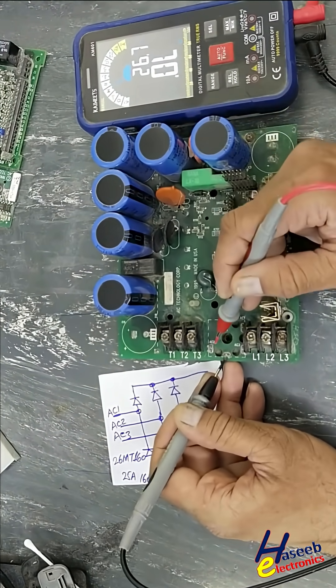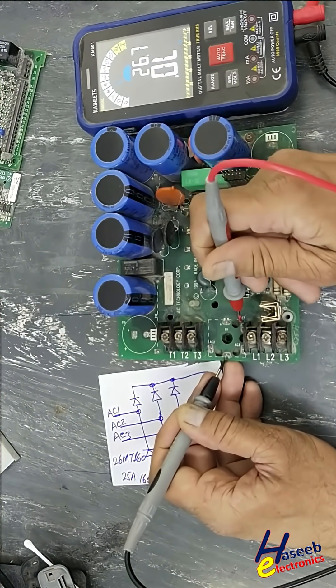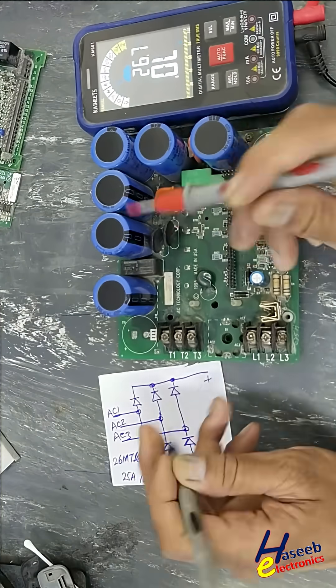Place the black lead at the negative terminal. All three readings show open circuit.